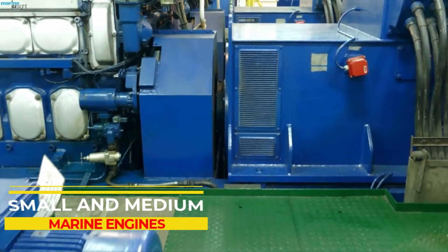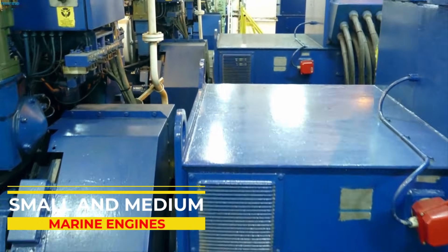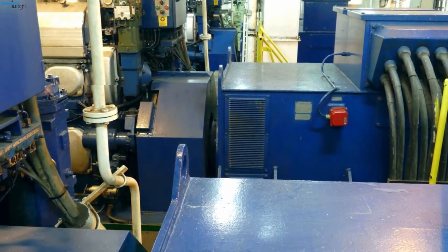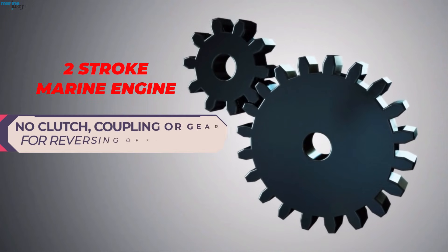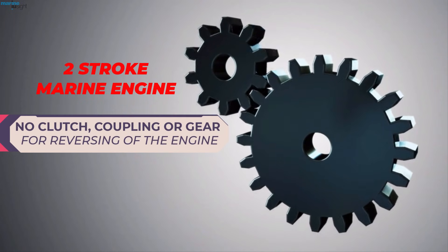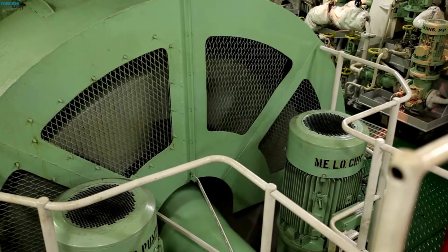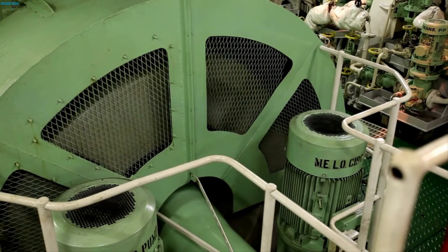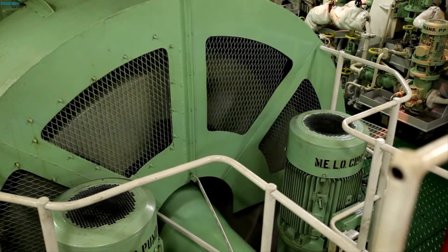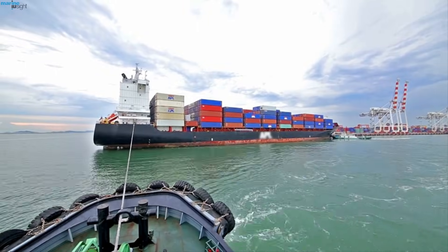Unlike medium or small sized internal combustion engines, the two-stroke marine engine does not have a clutch and gear systems to reverse the direction of the propeller. The entire engine rotation needs to be reversed for change of thrust direction, which in turn will reverse the ship motion.